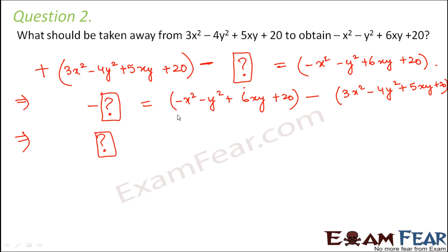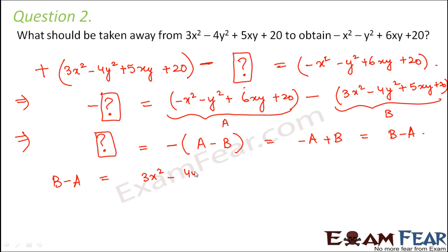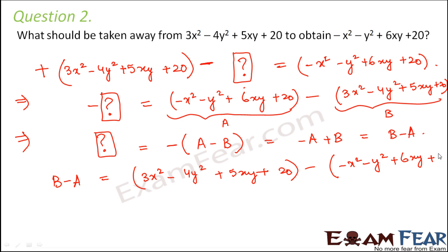Let us assume this entire value is a and this other value is b. On the right hand side we had a minus b, but when we shift the negative sign, we get minus a minus b, which equals minus a plus b. So a minus b becomes b minus a. Therefore we need to find b minus a, where b is 3x squared minus 4y squared plus 5xy plus 20, minus the expression: minus x squared minus y squared plus 6xy plus 20.